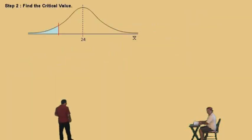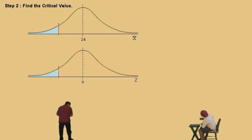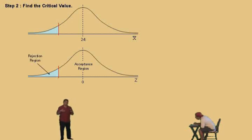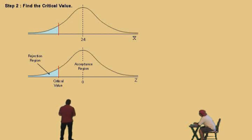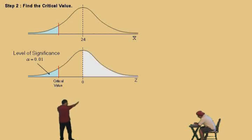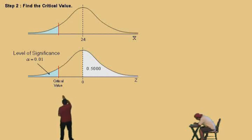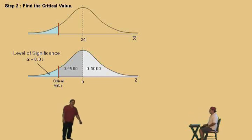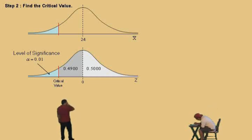Let's go to step two: find the critical value. Remember, everything is going to be translated to Z values. The middle region is always the acceptance region; the tail is always the rejection region. If a test value falls in the acceptance region, you accept H naught; if it falls in the rejection region, you reject H naught. The critical value separates the two regions. Our level of significance, alpha, is 0.01 — that's the area of the tail. The area to the right of zero under the normal distribution is 0.5, so the shaded region between zero and the critical value is 0.5 minus 0.01, which gives us 0.4900. That 0.4900 is used to find our Z critical value.